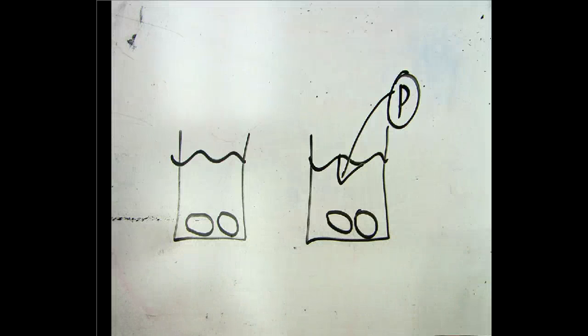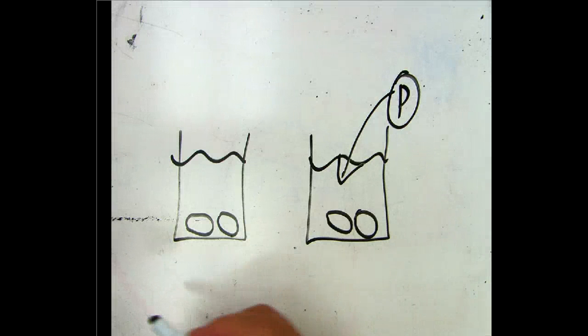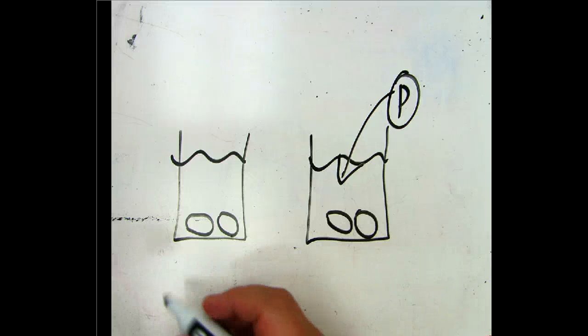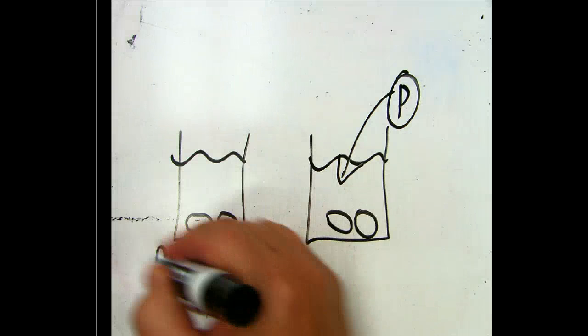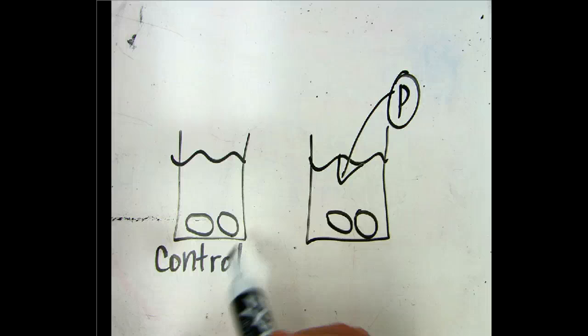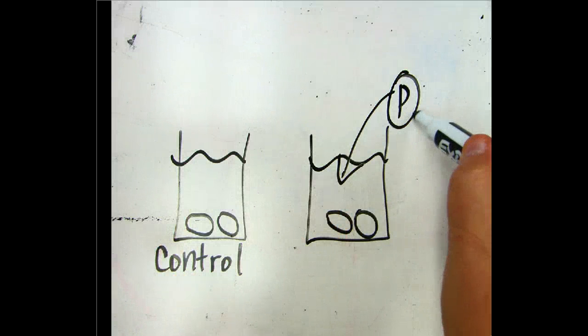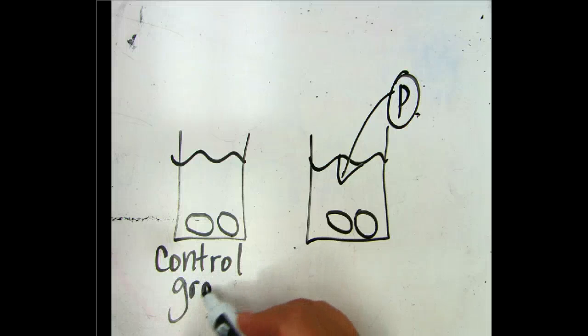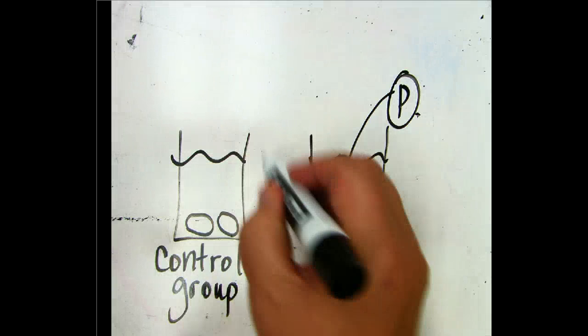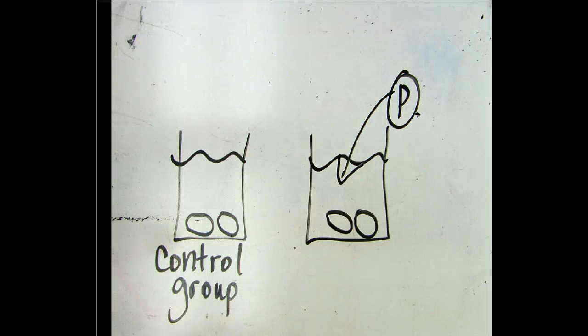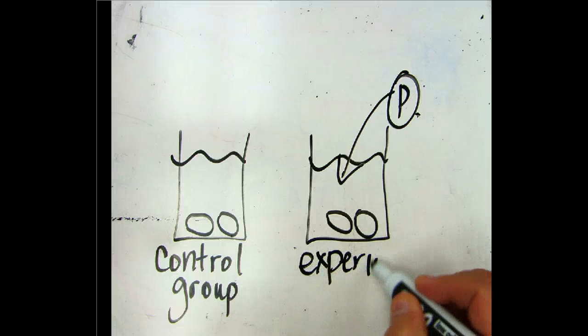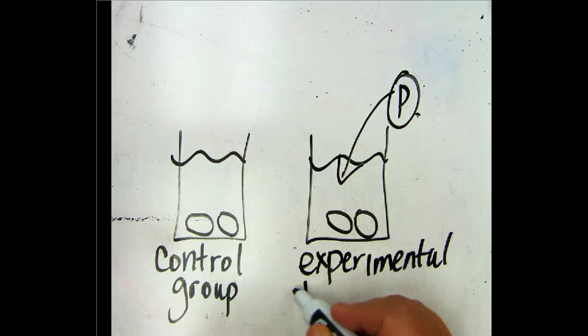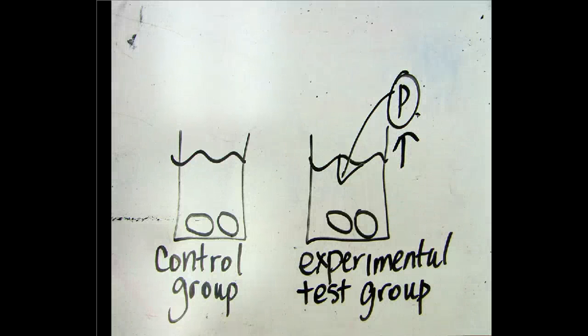The next thing that you need to understand is the difference between a control group and a test group or experimental group. So the control group is the one that we don't actually change anything in. We keep all the variables the same and we don't add that extra thing like over here. So this one is the control group, and that's usually the closest to normal. So this would be a mussel's normal environment. The experimental group or test group is the one that has the independent variable, that's the one that has the thing that we're changing.